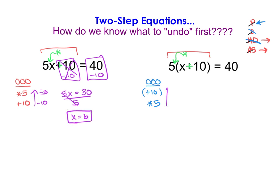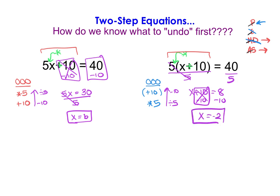Applying the same thinking to the right-hand problem, we undo our order of operations in reverse. We multiplied by 5, so we undo that by dividing — because 5 divided by 5 is 1. Then we have x plus 10 equals 8. We undo that addition of 10 by subtracting 10, which becomes 0, so x equals negative 2. Depending on your comfort level with two-step equations, you may need to write out the order of operations and undo them on paper, or you may already know the steps to take.